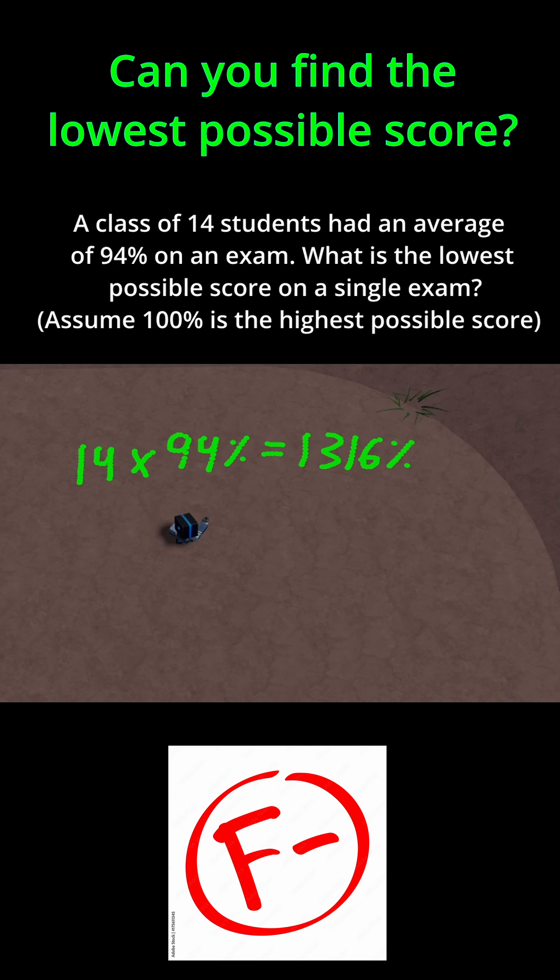What can I do with this number? Here's what I'm going to do. I'm going to say 1316% is equal to what the lowest possible score could be. Let me write that down: lowest possible.